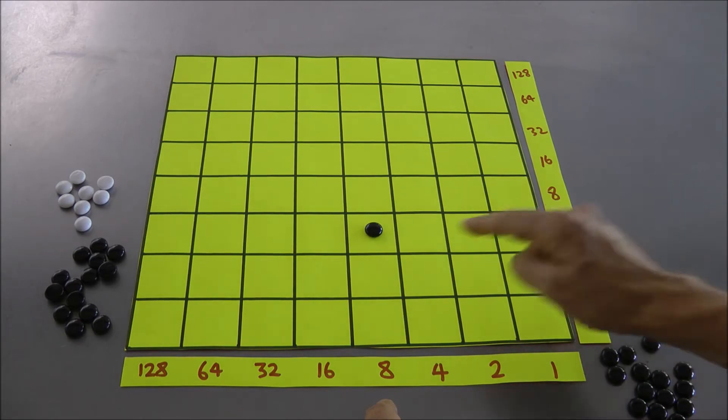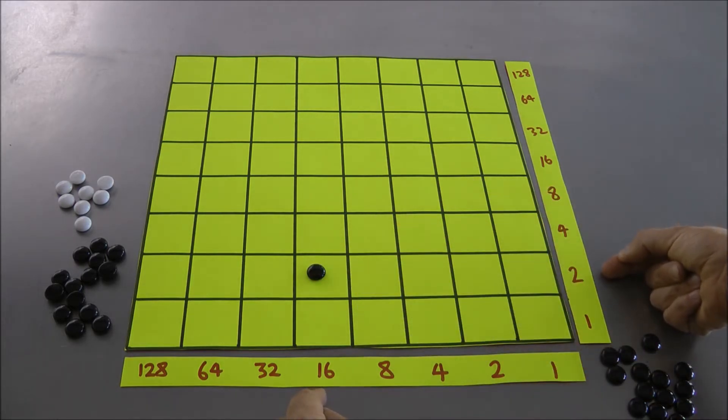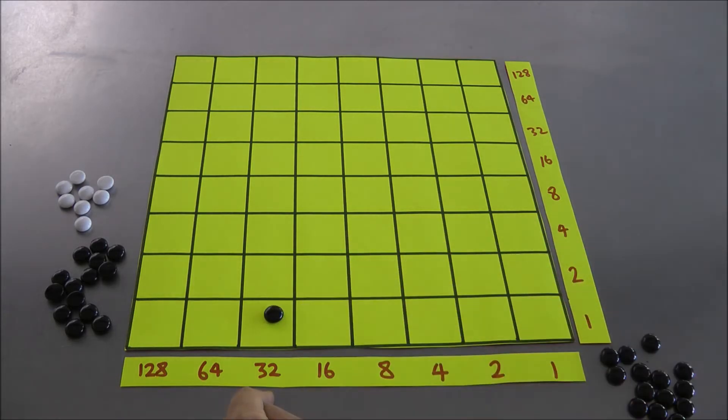Well if I halve this and double this. Instead of 8x4 I'll do 16x2. There it is. Same value. If I halve this and double that, 16x2 is the same as 32x1. Bingo!